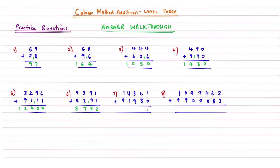Question 7: 1 add nothing is 1. 6 add 3 is 9. 3 add 9 gives me 12 — carry the 1, write the 2 underneath. 4 add 1 is 5, add the 1 there gives me 6. And then 1 add 9 gives me 10.